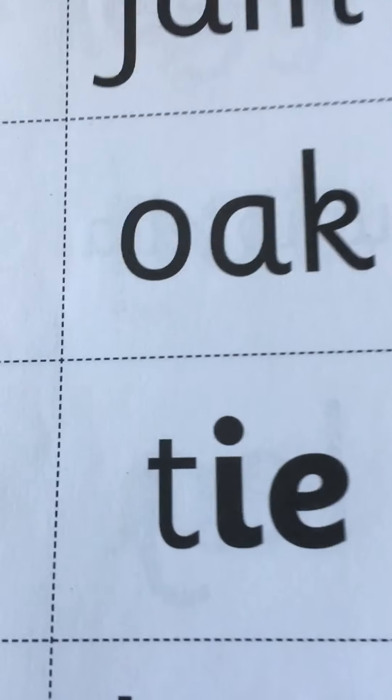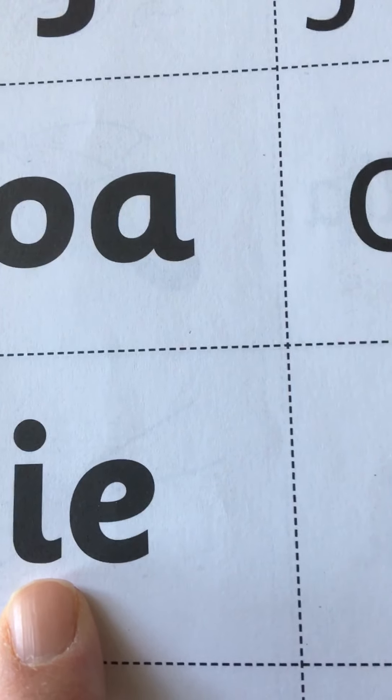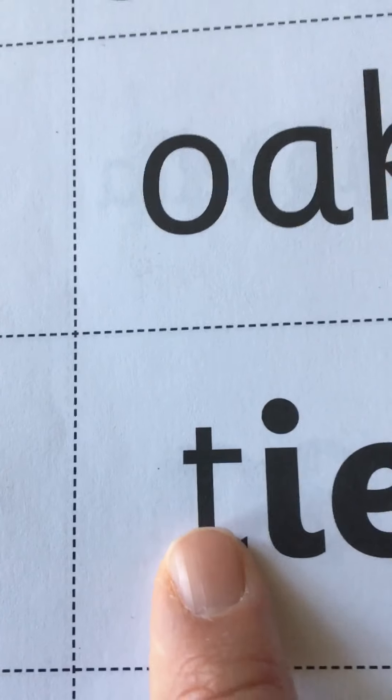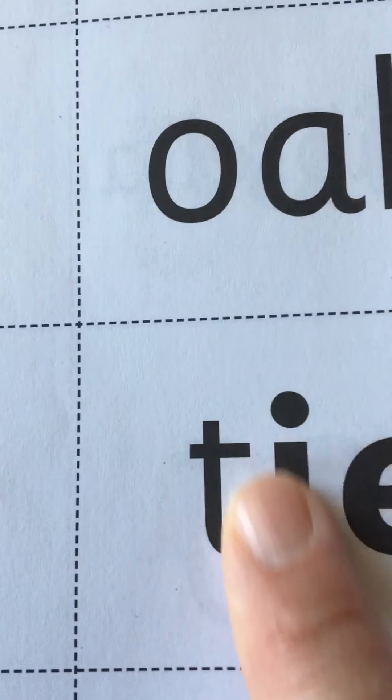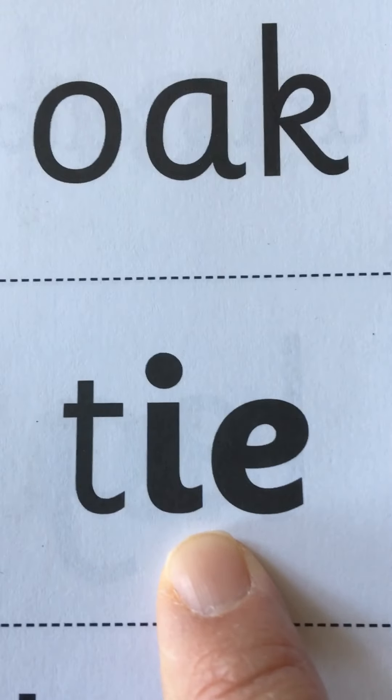Okay, notice boys and girls that the sound is not always going to be the first letter. It's not going to be the beginning sound. Like in tie, it's the T sound. It's the beginning sound, and I is after that.